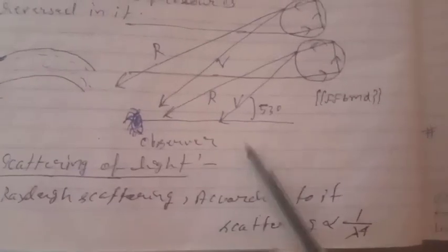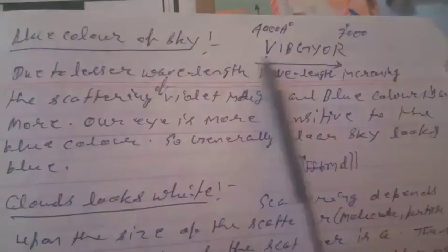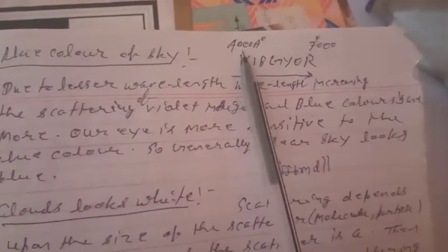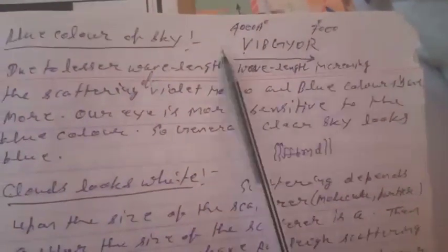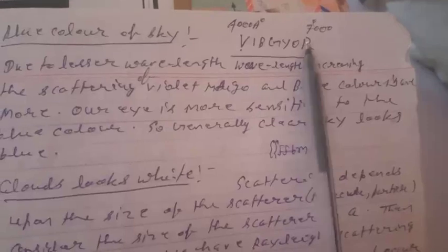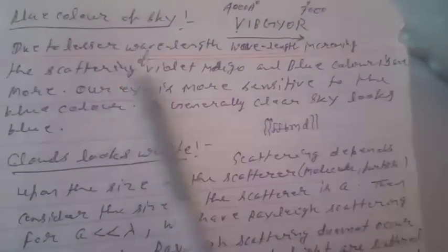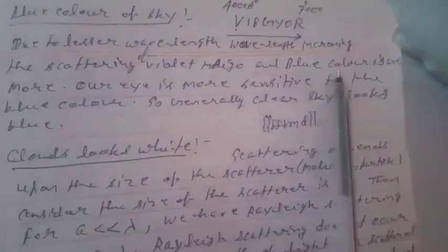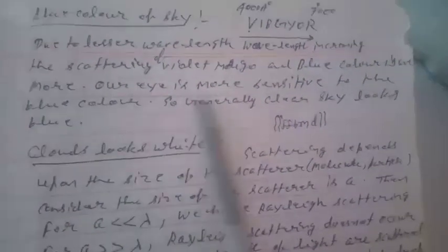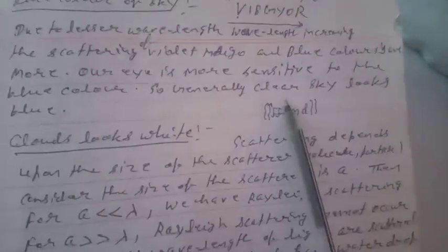Scattering of light — Rayleigh scattering: Scattering is proportional to 1/λ⁴. Blue color of the sky: White light is made of seven colors with different wavelengths. Violet has a wavelength of about 4000 Å and red about 7000 Å. Violet has the minimum wavelength and red has the maximum. Due to lesser wavelength, the scattering of violet, indigo, and blue is more. Our eyes are more sensitive to blue, so the clear sky looks blue.